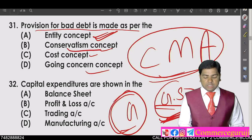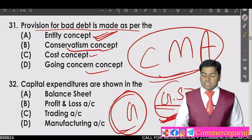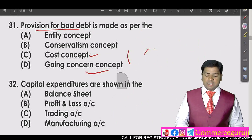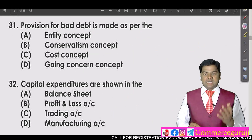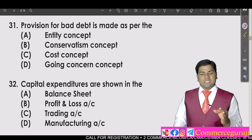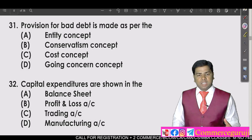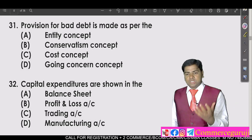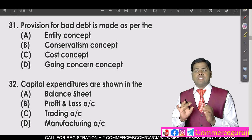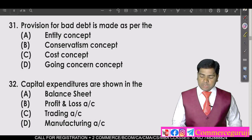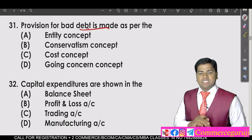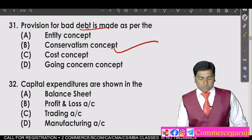What is the conservatism concept? Under conservatism, you have to anticipate and record losses. When a loss is expected, you must provide for it in advance. So the provision for bad debts is made as per the conservatism concept — you make the provision first before the loss actually occurs. So the answer is option number B.